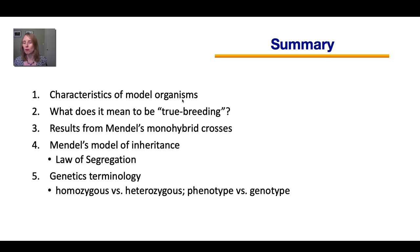So now let's summarize what you learned today. We first discussed the characteristics of model organisms such as pea plants, and what it means to be true breeding. Then you learned about the results from Mendel's monohybrid crosses — the crosses where the parents differed in just one character, such as flower color or height. Then you learned about Mendel's model of inheritance, including his law of segregation. Later you will learn about another one of his laws. And finally, I introduced you to genetics terminology such as homozygous versus heterozygous, and phenotype versus genotype. That's it for today.